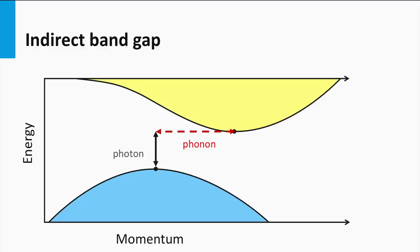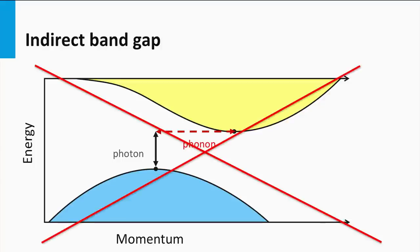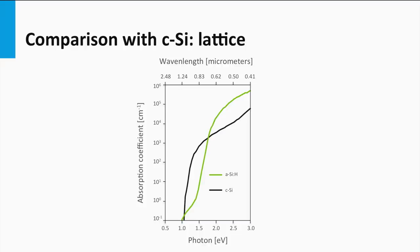An important consequence of a disordered lattice is that the electron momentum is poorly defined, in contrast to crystalline silicon. In crystalline silicon the electronic band diagram versus lattice momentum shows that both energy and momentum transfer is needed to excite an electron from the valence band to the conduction band — crystalline silicon is an indirect bandgap material. This does not hold for an amorphous lattice; therefore amorphous silicon does not act like an indirect bandgap material but a direct bandgap material. This has a positive effect on the absorption of hydrogenated amorphous silicon, making it more likely that a photon can be absorbed to excite an electron from the valence to the conduction band.